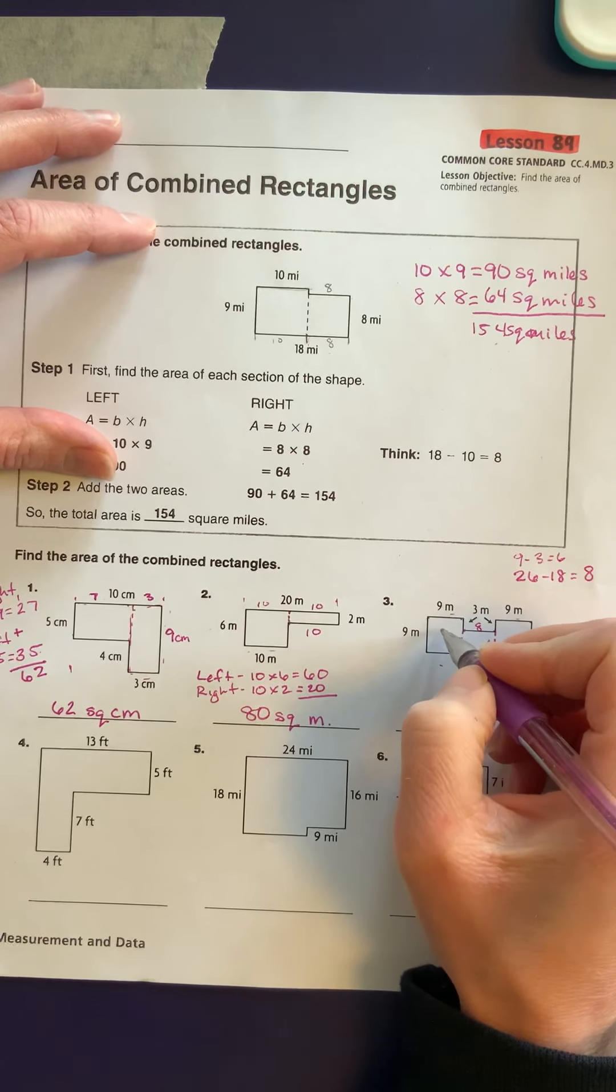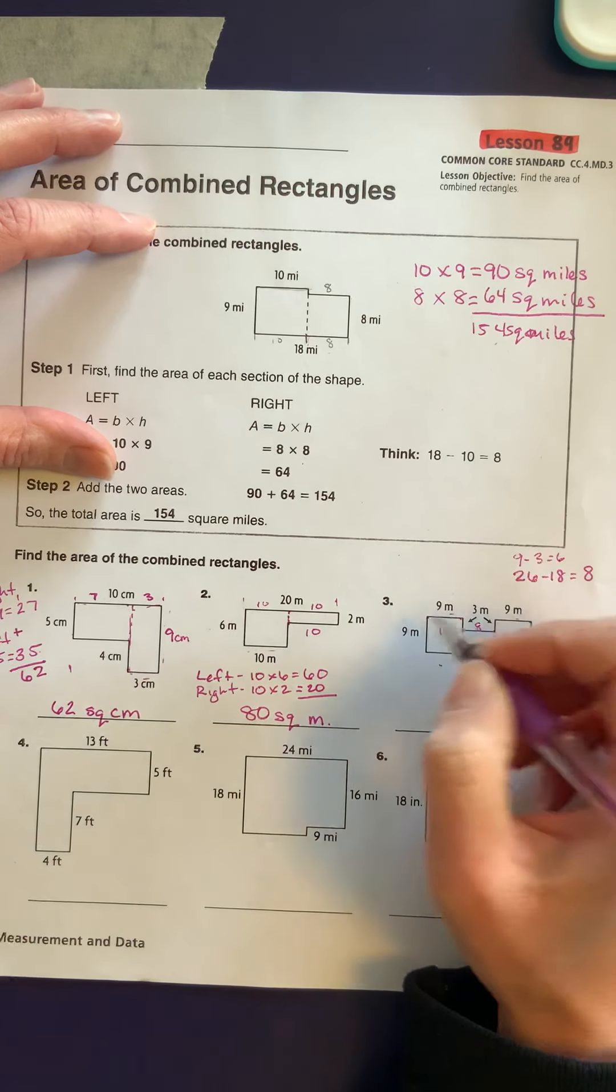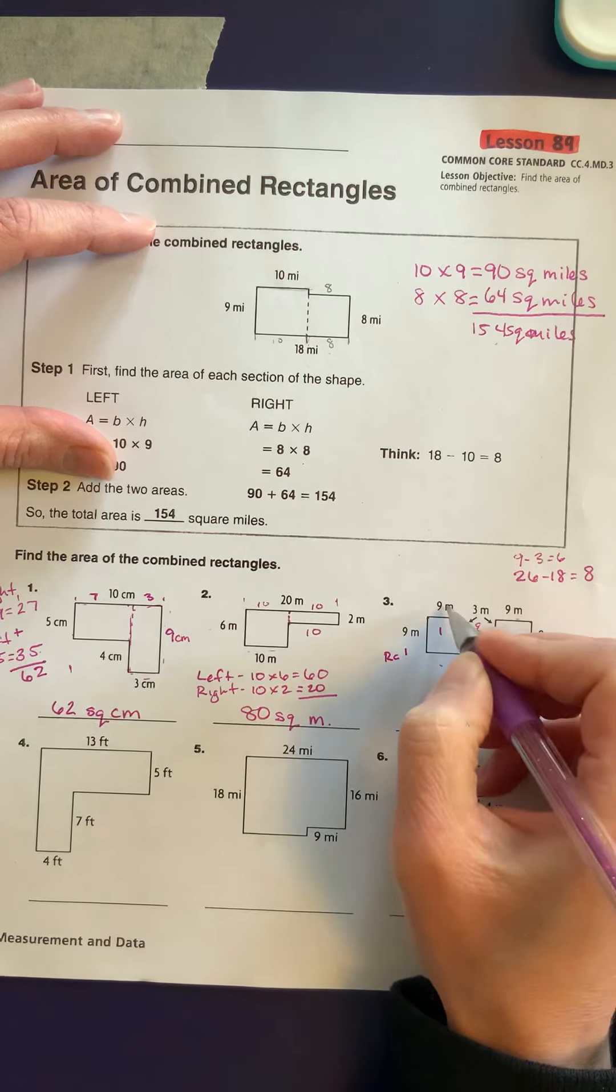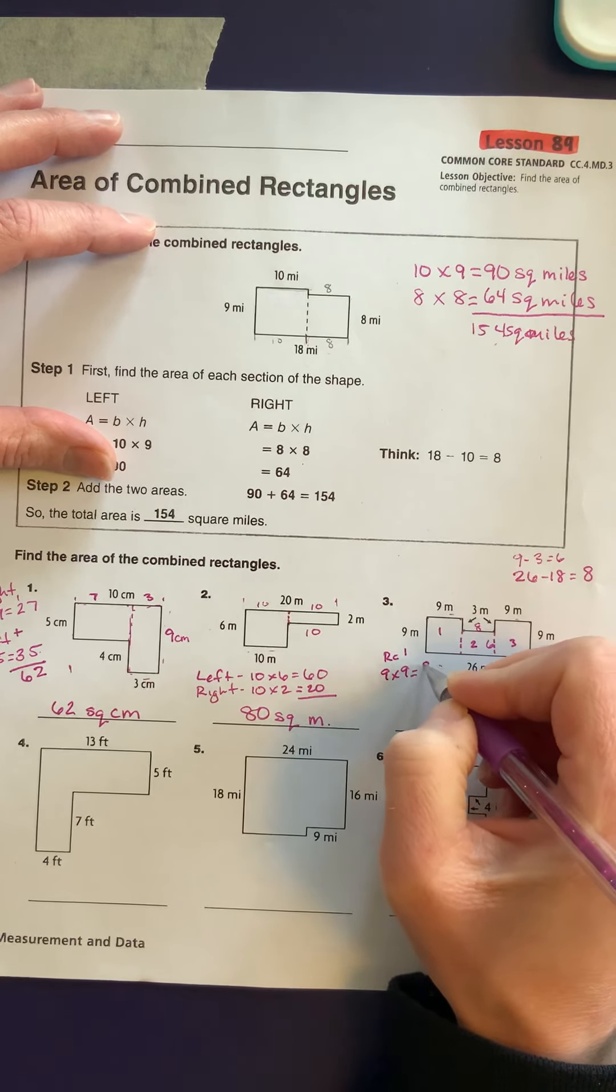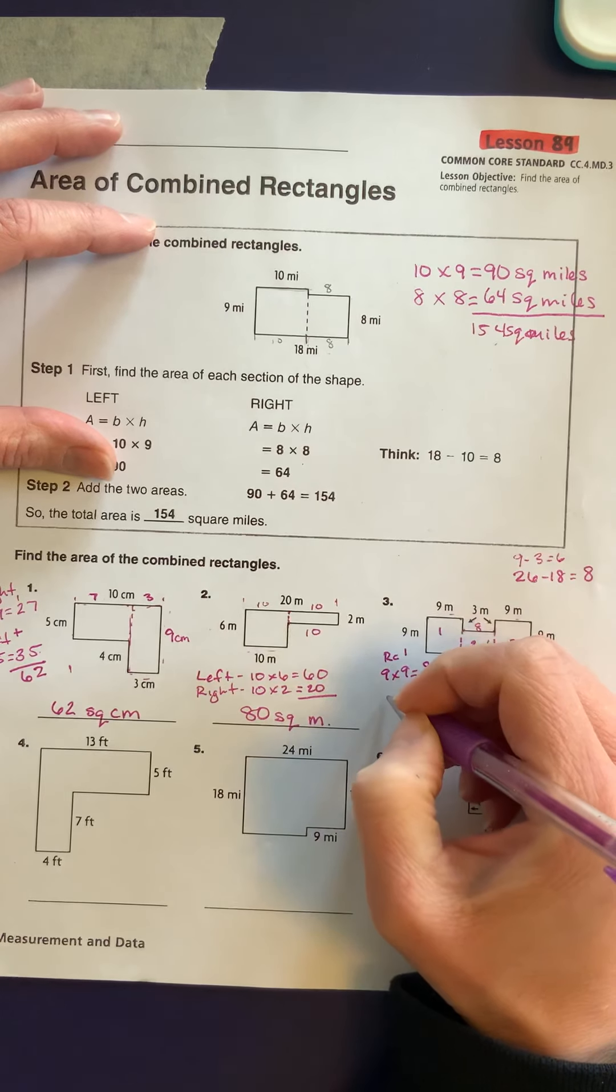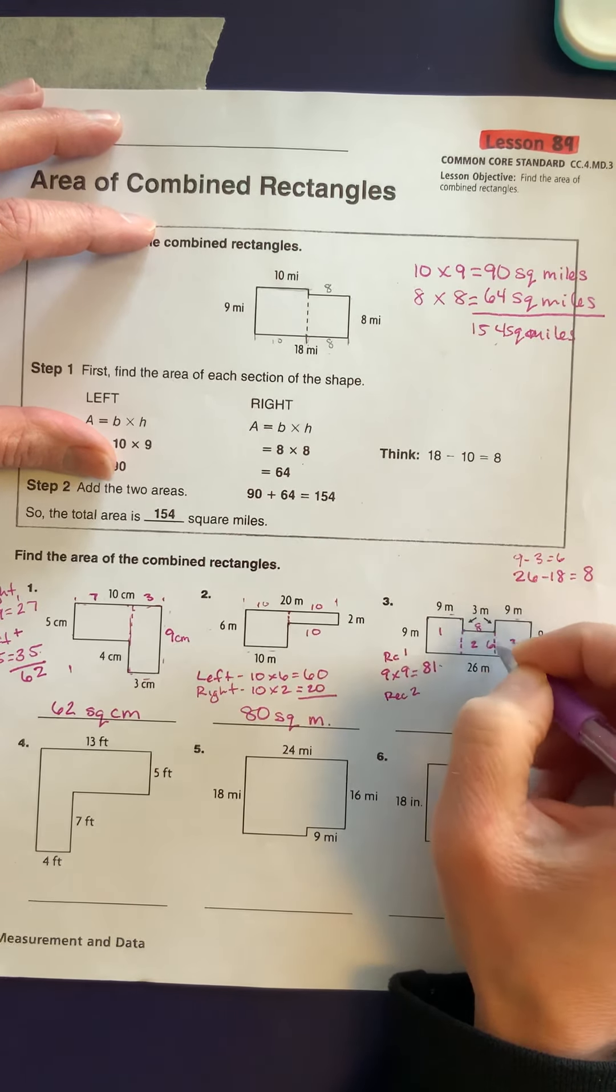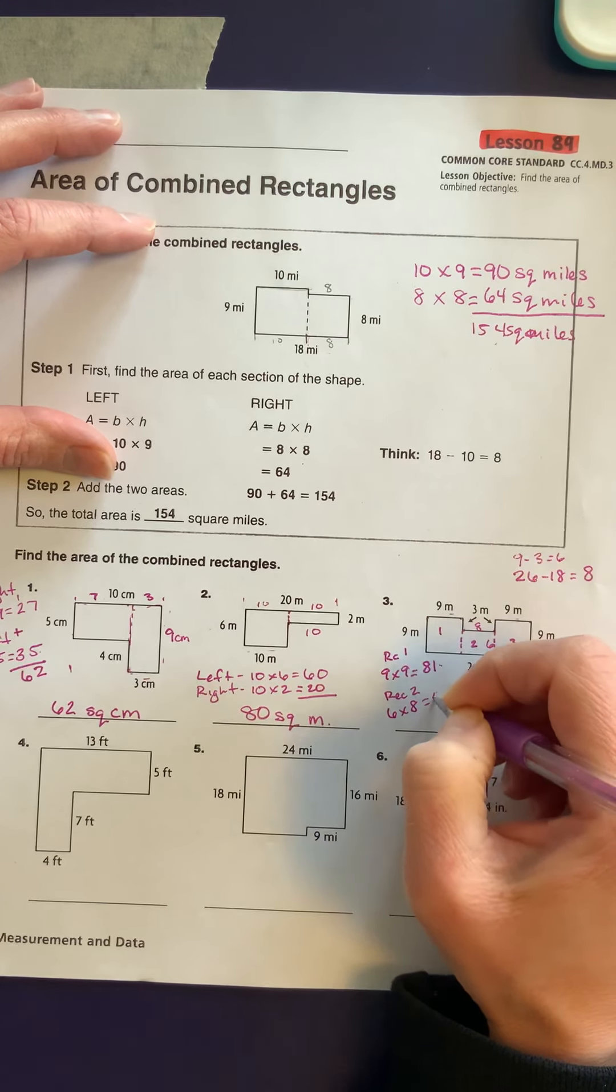So we're going to call this rectangle 1, rectangle 2, and rectangle 3. Rectangle 1 is going to be 9 times 9, which gives me 81. Rectangle 2 is going to be 6 times 8, which gives me 48.